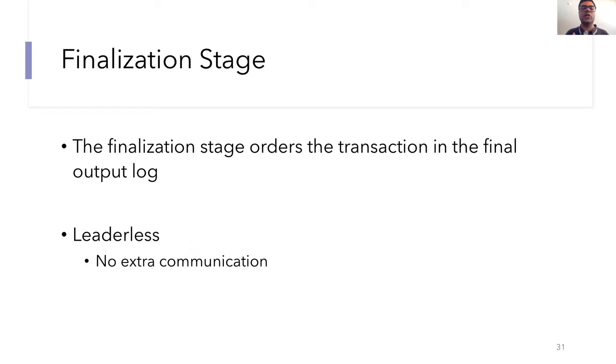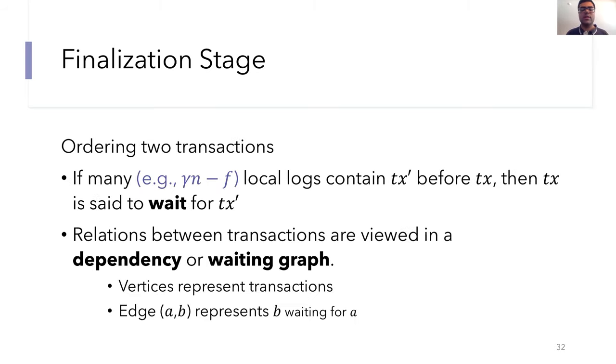The third and last stage is the not so cleverly named finalization stage, where you might have guessed it, nodes will finalize the ordering for a given transaction TX. Our finalization stage is leaderless and involves no further communication between the consensus nodes. All of the computation can be performed locally. The main subproblem for the finalization stage that we need to solve is to decide on the ordering for a given pair of transactions TX and TX prime.